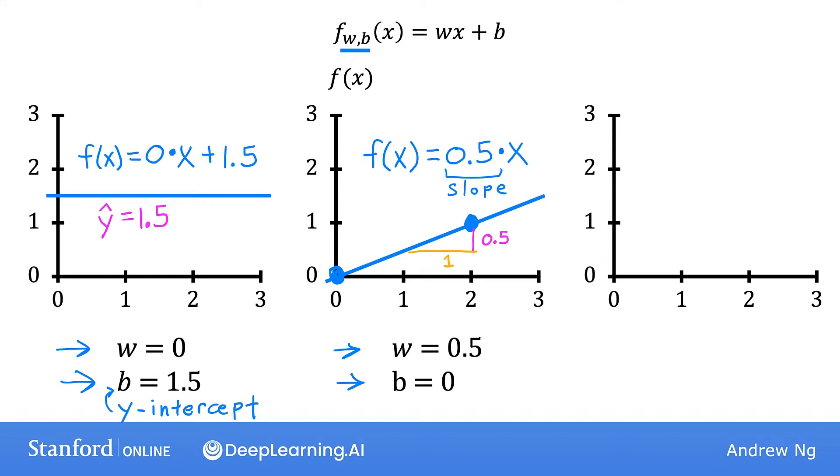And finally, if w equals 0.5 and b equals 1, then f of x is 0.5 times x plus 1. When x is 0, then f of x equals b, which is 1, so the line intersects the vertical axis at b, the y-intercept. When x is 2, then f of x is 2. Again, the slope is 0.5 divided by 1, so the value of w gives you the slope.